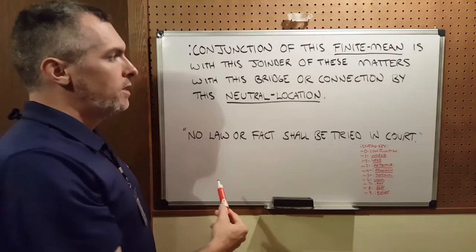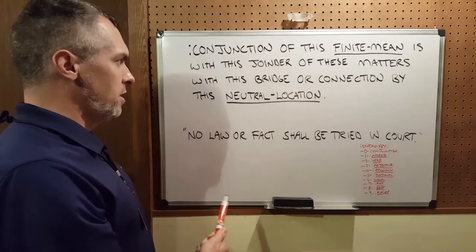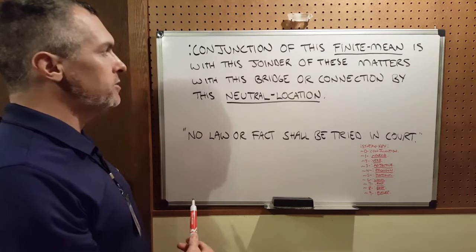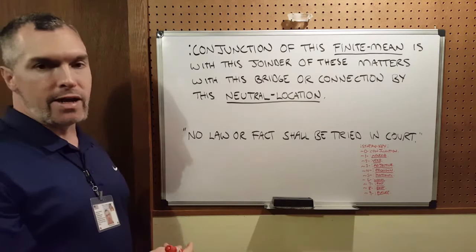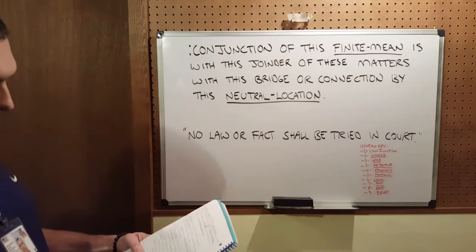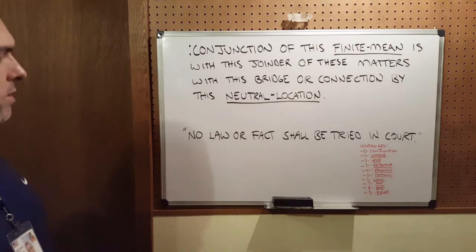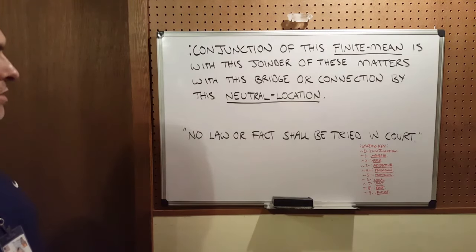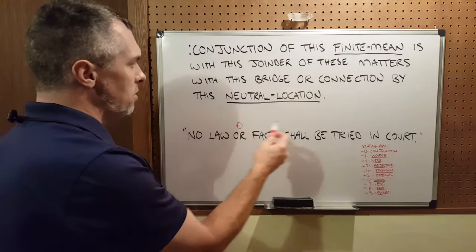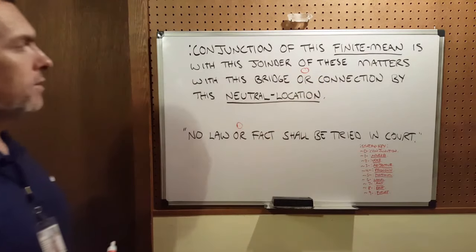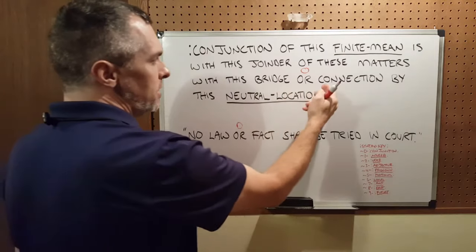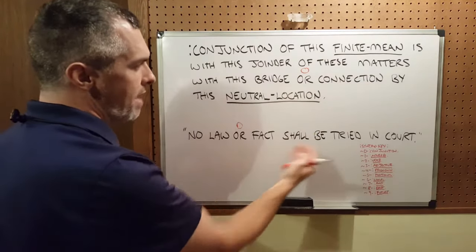And backwards, that is: for this neutral location, of this bridge or connection is, with these matters of this joinder, with this finite mean by the conjunction. Now in syntax, conjunctions are specified as zero. They are bridges between this matter and that matter, this matter and that matter.